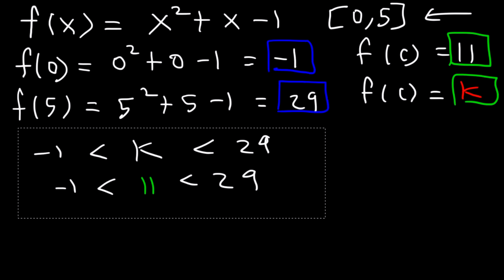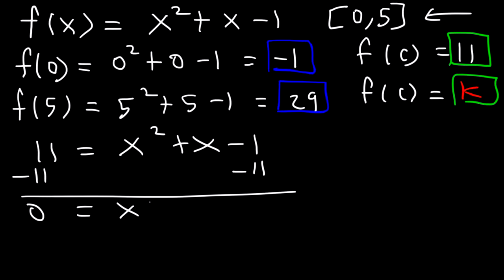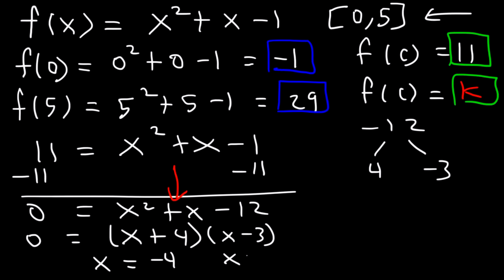So now we've got to find the value of c. f of c is 11, so we're going to set 11 equal to the function f of x and find the value of x. Let's subtract both sides by 11 to begin with. So x squared plus x minus 12 is equal to zero. Now we can factor — we need two numbers that multiply to negative 12 but add to the middle coefficient of one. So that's positive four and negative three. Therefore we're going to have x plus four and x minus three, so x is equal to negative four and positive three.